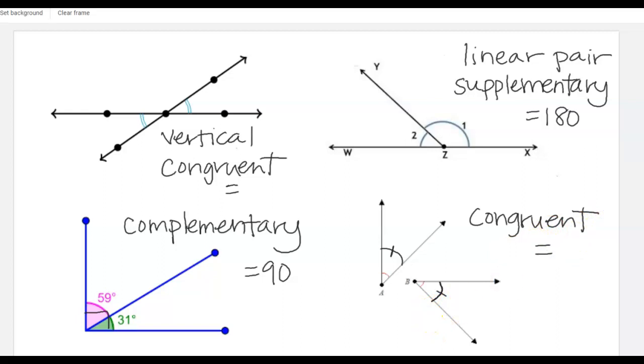Congruent angles are equal measure. So if I'm told two angles are congruent or I'm shown it with the arc markings, then I'm going to make sure I set those equal to each other. So just like the vertical angles.